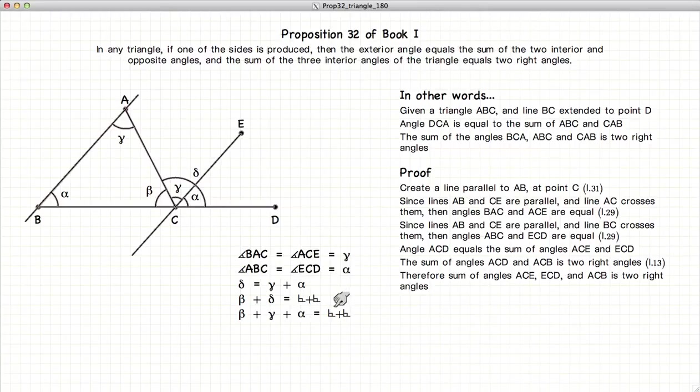So here we have demonstrated that for a triangle, the exterior angle delta is equal to the sum of the two interior angles. And that the sum of all the interior angles is equal to two right angles, or 180 degrees.